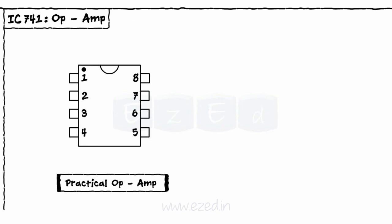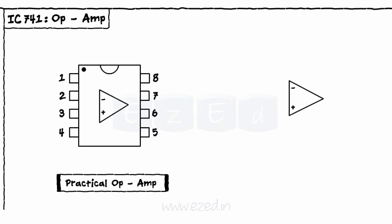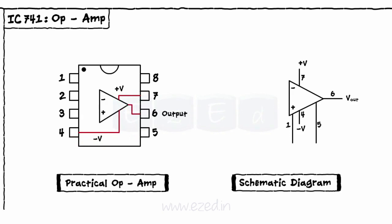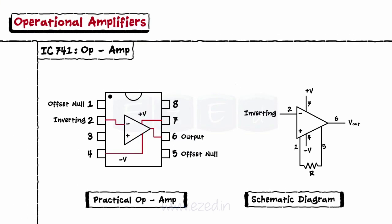This op-amp is represented as a triangular structure with all seven pins. Pin number six is for output. This IC needs two power supplies, positive and negative, given at pin numbers seven and four respectively. Between pin number one and five, an offset resistor is connected. Pin number two is called the inverting terminal, and pin number three is called the non-inverting terminal.